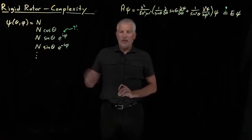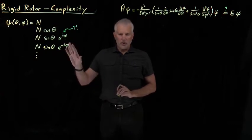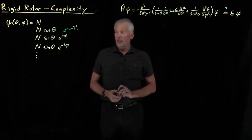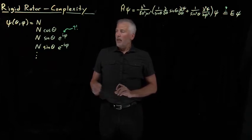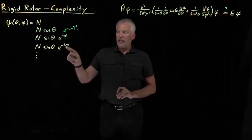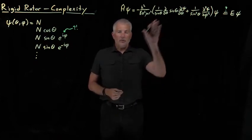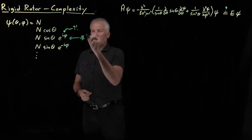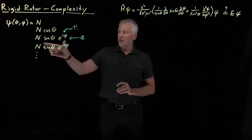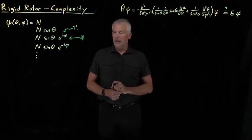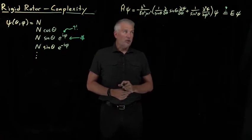Does that present any problems for understanding what these wave functions mean? We're used to thinking about real numbers, but we have more difficulty thinking about what complex numbers mean in the real world. As a first step, let's confirm that these solutions with the i in them do, in fact, solve the rigid rotor Schrödinger equation. We'll take this function and insert it into the Schrödinger equation for the rigid rotor and confirm that it presents a solution.